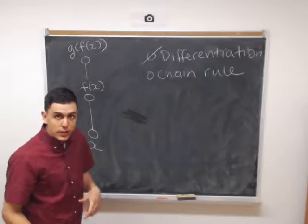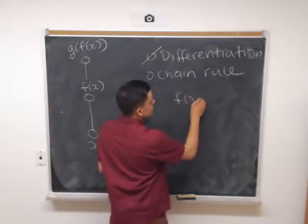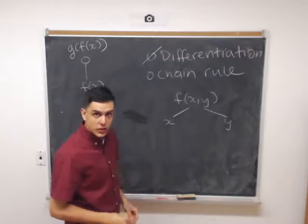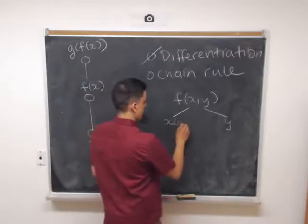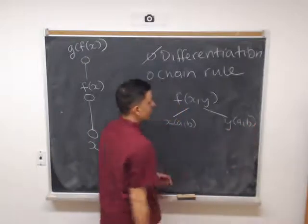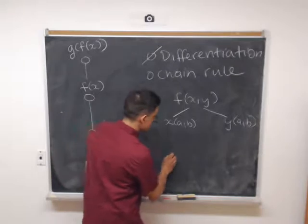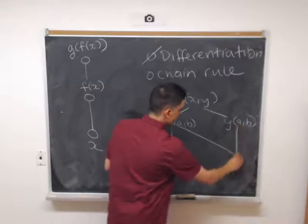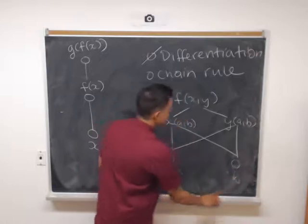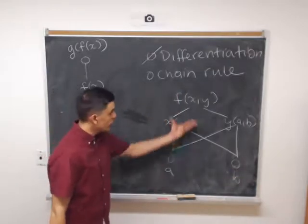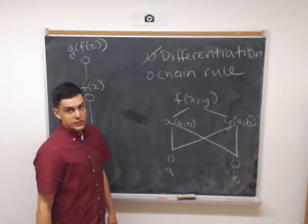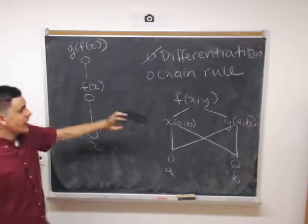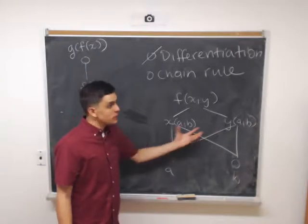However, in multiple variables, we can have the following phenomenon. If we have a function which is based on two variables, x and y, then those, in turn, can be based on other variables. And now, we have the following situation. x is based on a and b. y is based on a and b. And now, we have some kind of non-linear flow of information from a to f of x. So, in one variable, we always get a linear chain of functions. And in multiple variables, we can sometimes get two-dimensional structures among our variables.